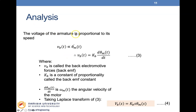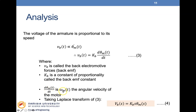The voltage of the armature is proportional to its speed, so Vb(t) is directly proportional to the rate of change of angular position. Therefore Vb(t) = Kb · dθM/dt, where Kb is the back electromotive force constant, and dθM/dt is the angular velocity ωM of the motor. Taking the Laplace transform of this equation yields the s-domain form: Vb(S) = Kb · S · θM(S).